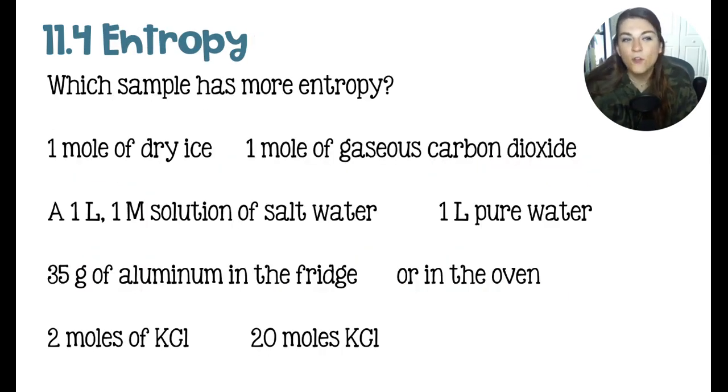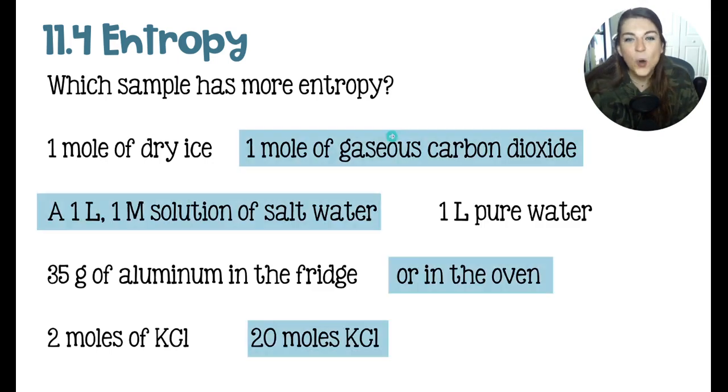Up next is entropy. We have four examples here. And the question is, which in each set has more entropy? A mole of gas is going to have more entropy than the same amount of a solid. Dry ice is just solid carbon dioxide. So having the gas where the particles are flying all around all over the place is going to have more chaos and disorder, entropy, than the equivalent sized solid sample.